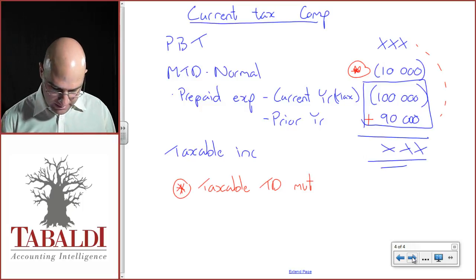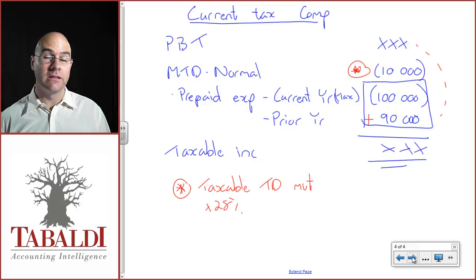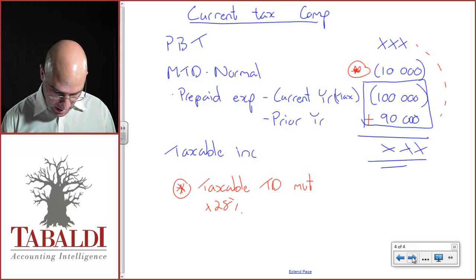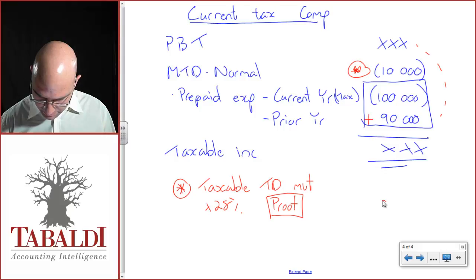And if I take that 10,000 and times it by 28% to get the deferred tax effect, I'm going to land up with my proof for my deferred tax journal. So that proof would be 10,000 times 28%, 2,800 debit, 2,800 credit.